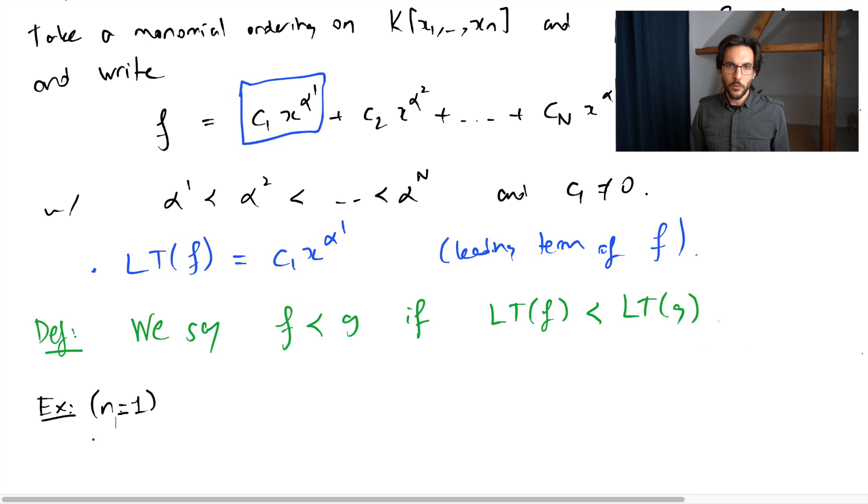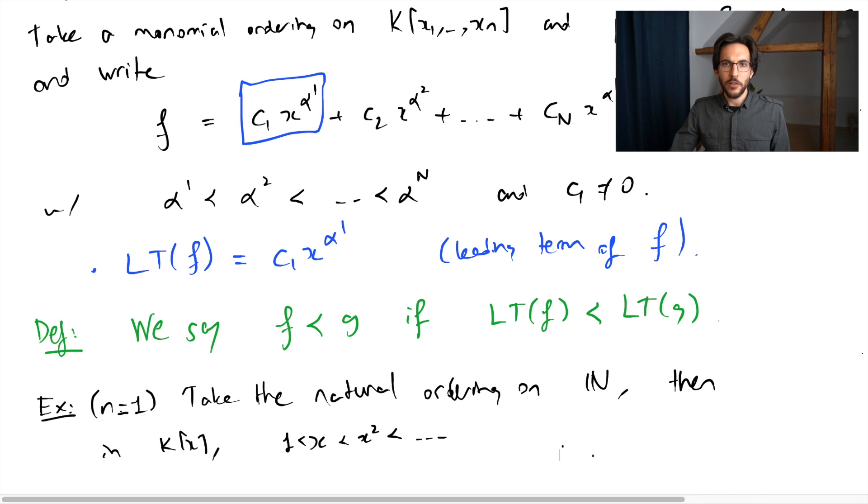Let's take the following baby example with a single variable. We're going to take the obvious ordering on natural numbers, and then this is going to give us the following: we get 1 is less than x, x is less than x squared and so on. And we get the usual ordering in the univariate polynomial ring. And a polynomial will be smaller than another one if its degree is smaller than the degree of the other one.